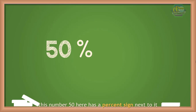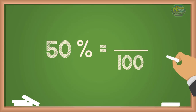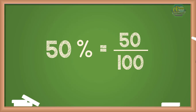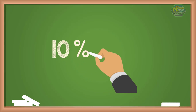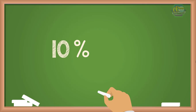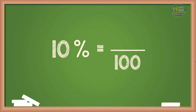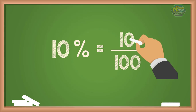The root word 'cent' is a Latin word for 100, therefore percent literally means 'per hundred.' For example, the number 50 has a percent sign next to it, so we read it as 50 percent. Another example: the number 10 has a percent sign next to it, so we read it as 10 percent, and we can convert it to a fraction with a denominator of 100 — so 10 percent equals 10 over 100.